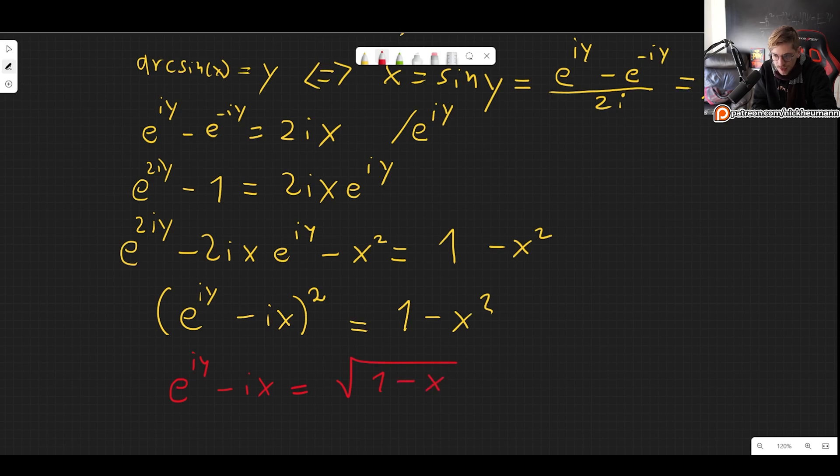And we have that e to the iy minus ix is equal to the square root of 1 minus x squared. Of course, notice that our x is constrained in its value, right? It can't go any greater than 1 or minus 1. But that's also the constraint in the arc sine.